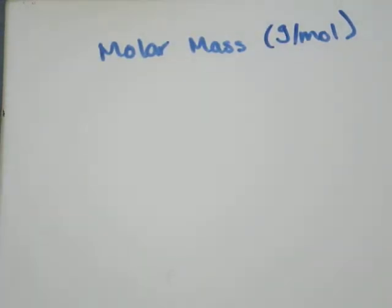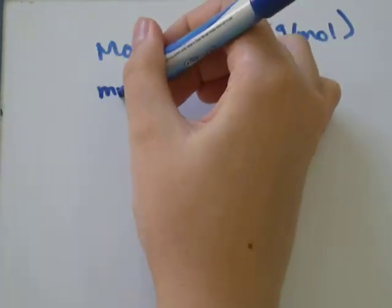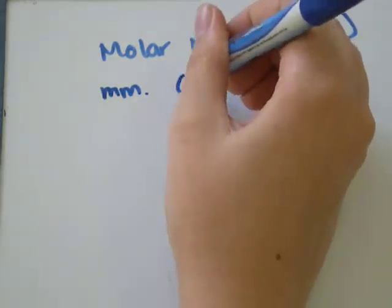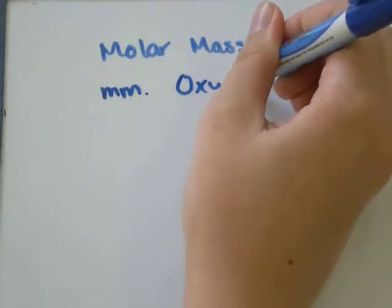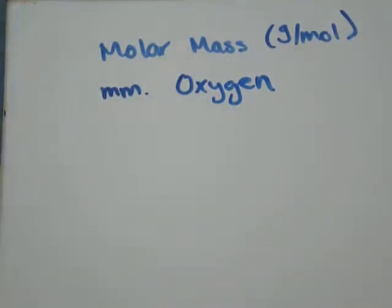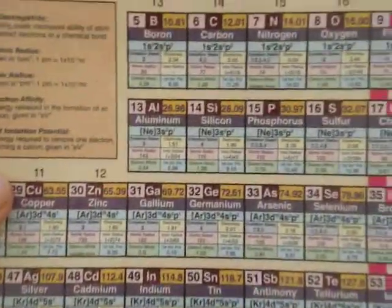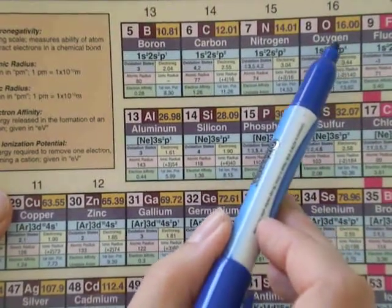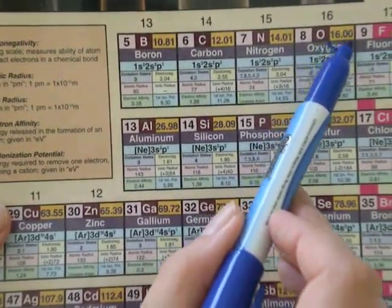So, it's pretty easy to find the molar mass of an element. All you need to do is look at your periodic table. And we're going to find the molar mass of one atom of oxygen. So all you need to do is go to your periodic table. This is mine, it's fancy.